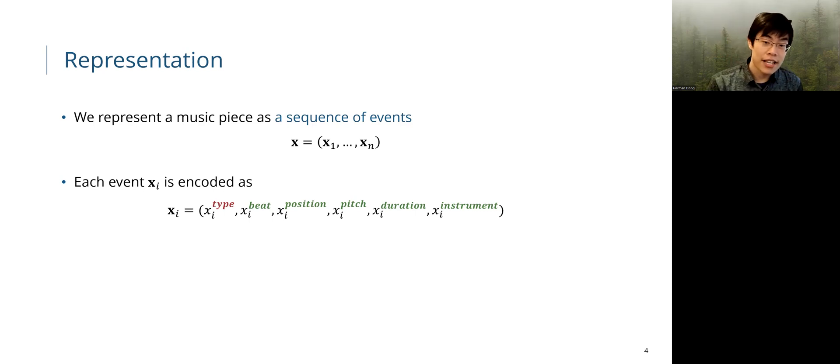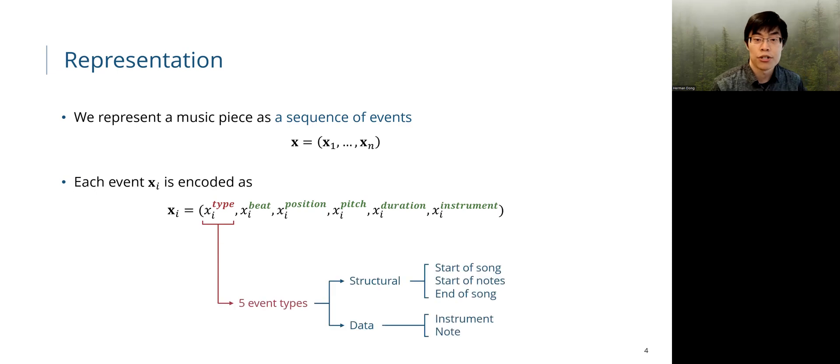There are five event types. Three of them are structural types, which mark the start of song, the start of note event list, and the end of the song. And there are two types of data events, instrument events and note events. These data events are specified by the other five fields.